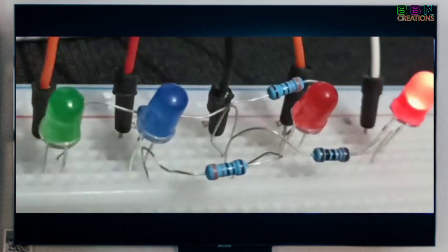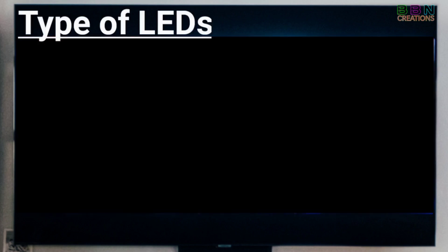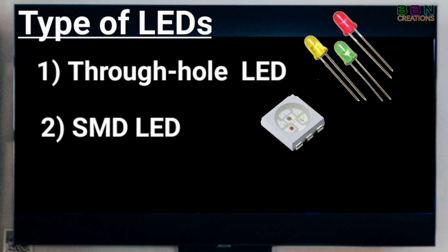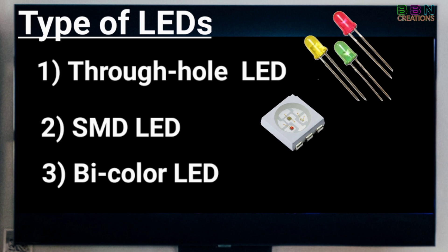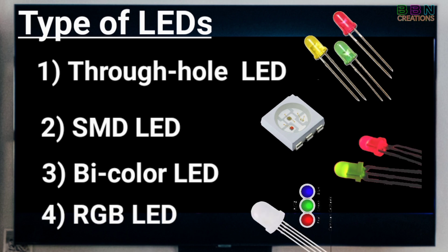Types of LEDs: the first type is through-hole LEDs, the second type is SMT LEDs, the third type is bicolor LEDs, and the fourth is RGB LED — red, blue, green LED. An RGB LED contains three LEDs on a single chip, either three anodes and a common cathode, or three cathodes and a common anode. I think you have got the basic idea of LEDs.